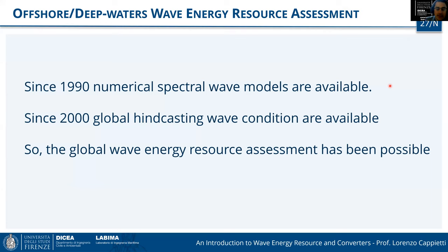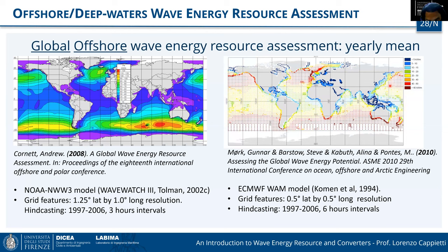Global wave hindcasting models appeared in 1990, and since 2000 global hindcast conditions are available, enabling global wave energy resource assessment. Maps from 2008 and 2010 show that at the global scale, larger wave power is present in the southern hemisphere, while somewhat smaller values are present in the northern hemisphere. These results are confirmed by many studies.